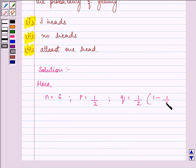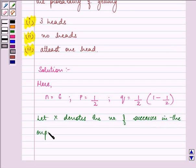That we will get by subtracting one by two from one. Now let x denote the number of successes in the experiment. Then x varies from zero to six.